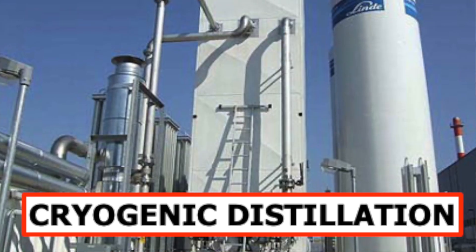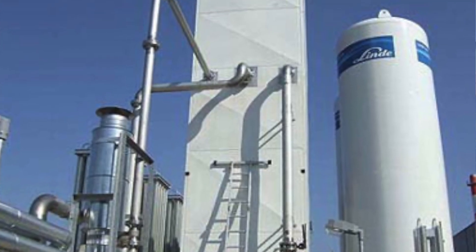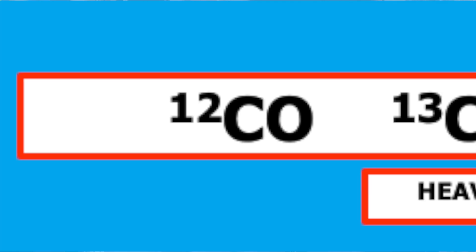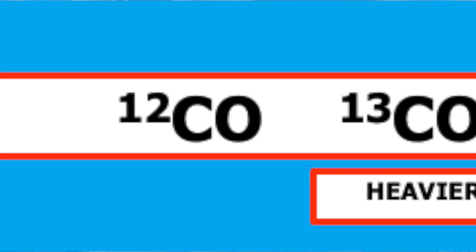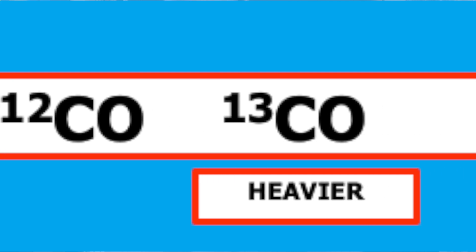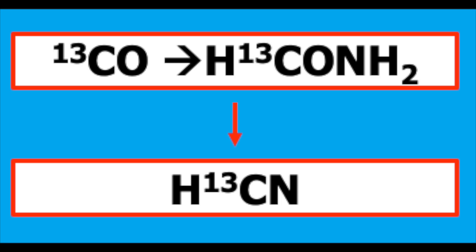The way that is done is by taking carbon monoxide gas and cooling it down until it becomes a liquid, then distilling it. Because carbon monoxide in which the carbon is C13 is somewhat heavier, it will be more difficult to distill. So in a complex distillation process, you can separate C12 carbon monoxide from C13 carbon monoxide. Once you have the C13 carbon monoxide, it can be converted to formamide with C13 in it, which can then be converted to cyanide.